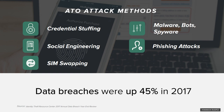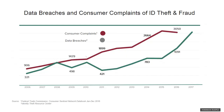Phishing attacks are where you get an email that looks very legitimate from a company you traditionally work with, and they get you to click on a nefarious link. SIM swapping has been increasing in the last couple of years — this is where fraudsters call into a wireless carrier and get them to do the SIM swap so they can intercept SMS messages or OTP passwords.